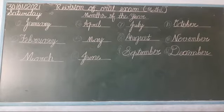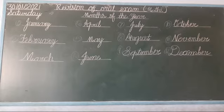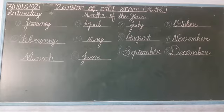Students, do you understand? Months of the year — 12 months in a year. January, February, March, April, May, June, July, August, September, October, November and December. January is the first month of the year. And December is the last month of the year. And February is the smallest month.